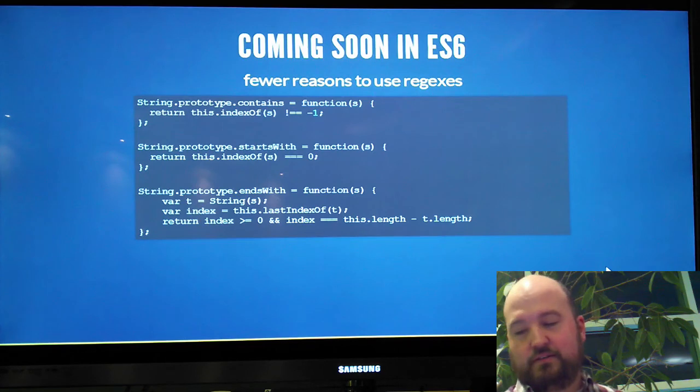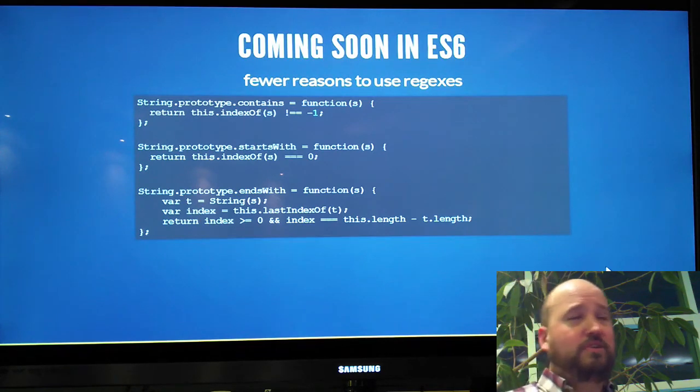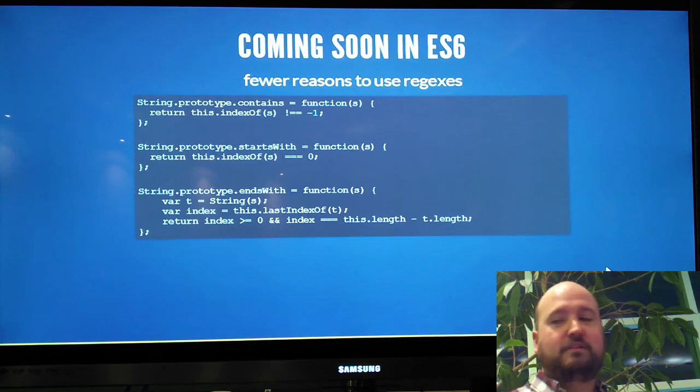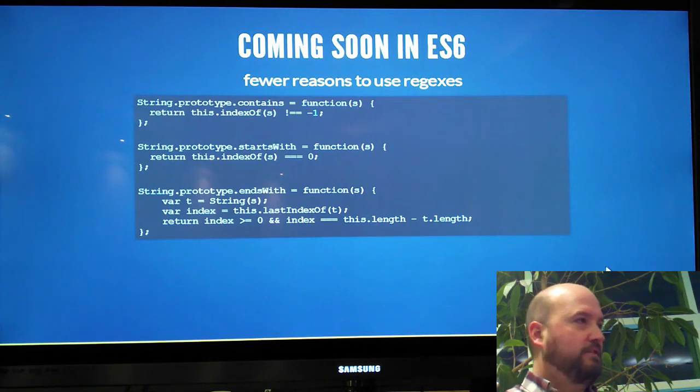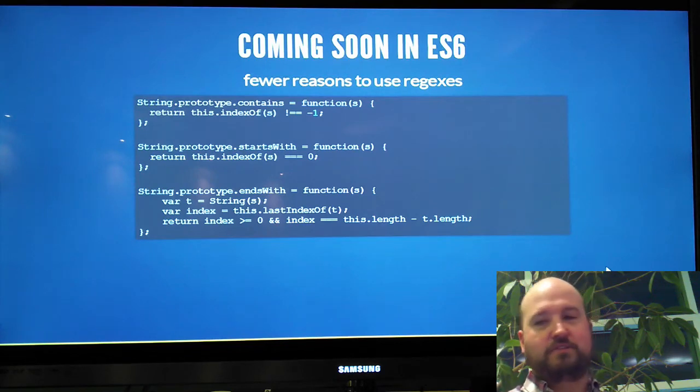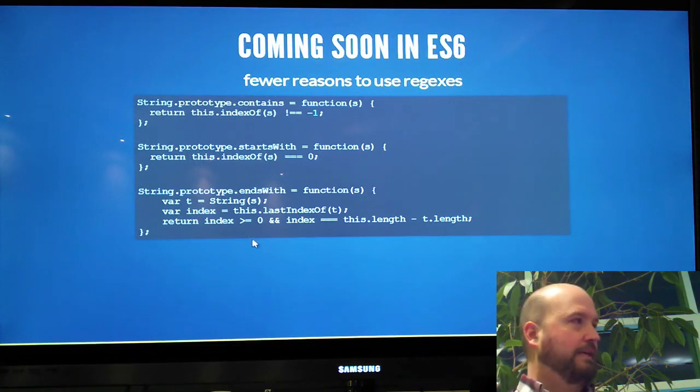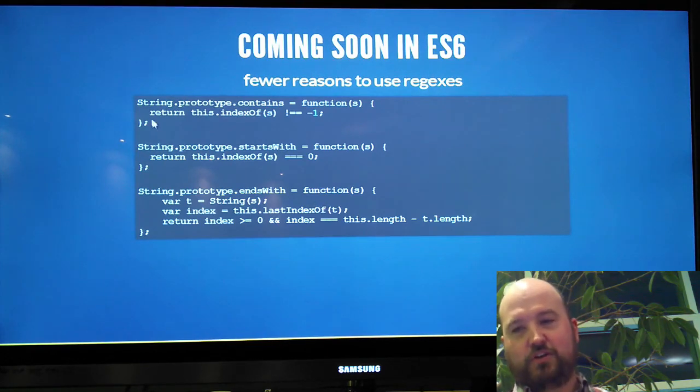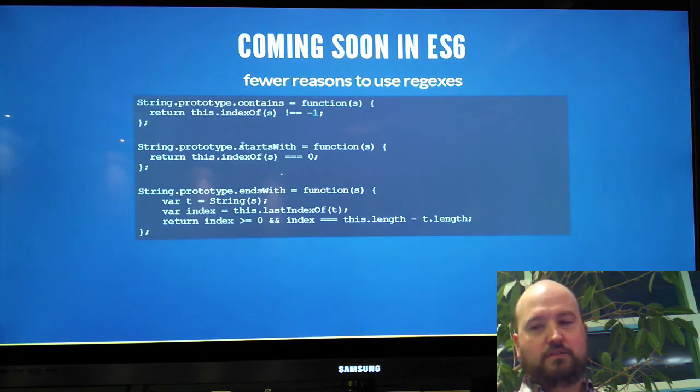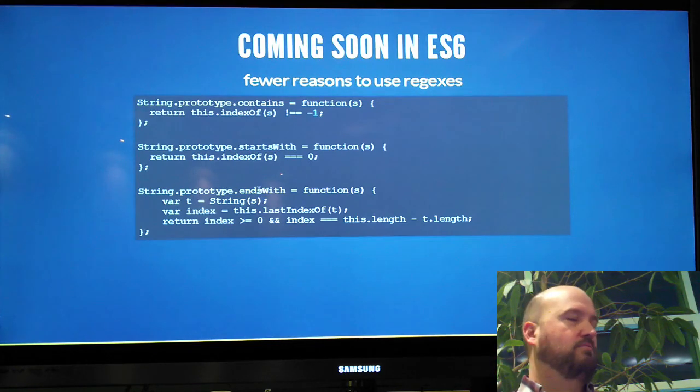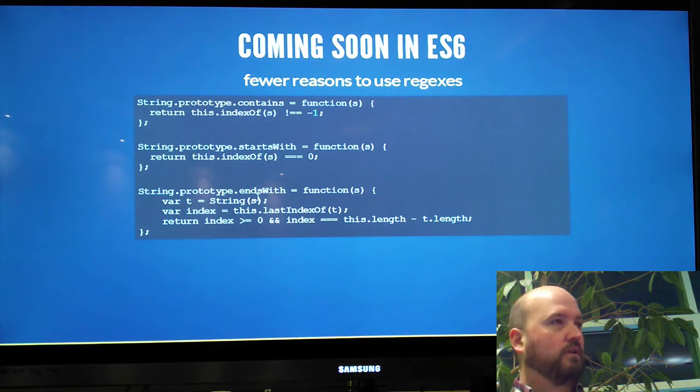A few things coming in ES6. We want to make sure that we're using string functions whenever possible. Because regexes are heavy, heavy lifting. You want to use index of right now. But there are some other things coming in that are very close. So, there's string dot contains. These are just sort of like ES6 shims, approximating the behavior of what is to come. Contains starts with, ends with. Which is nice. Because, especially with starts with and ends with, we're not going to need to use anchors for the beginning or the end of a string literal.